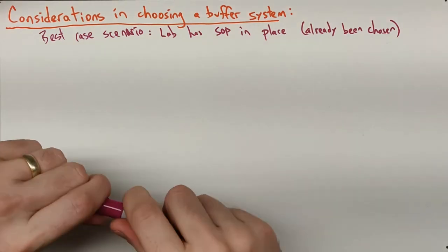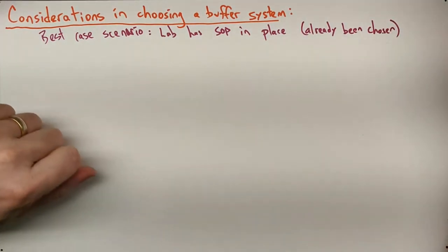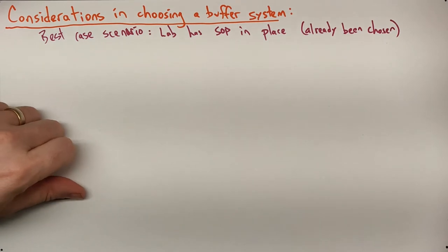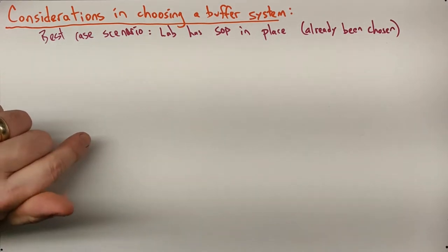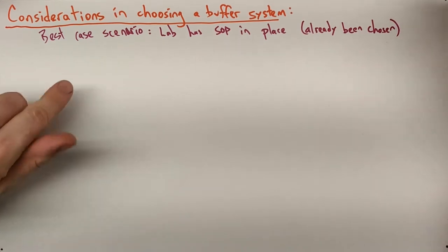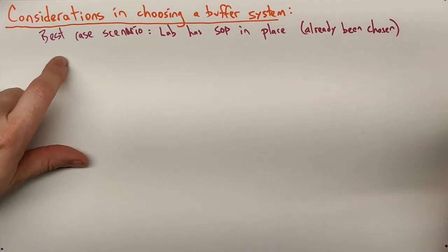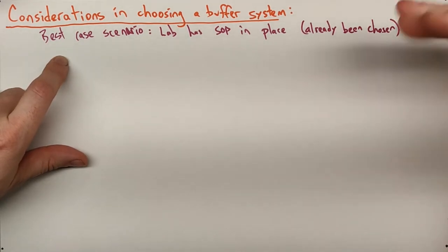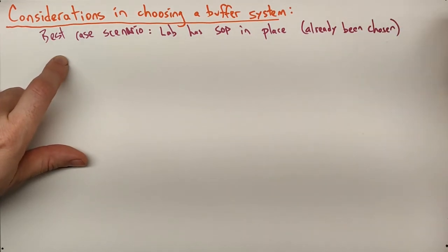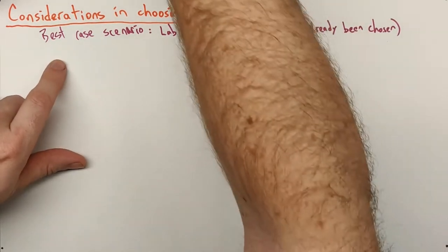I think it's somewhat overwhelming if you're tasked with coming up with a buffer system for whatever to a specific pH, at least until you see that it boils down to some key parameters. Best case scenario is your lab's already got some standard operating procedure in place with instructions on how to make the buffer and they have a buffer chosen. If you're doing research on stuff that hasn't been done before or just doing it as an exercise for class, you're going to be stuck following these steps in one way or another.